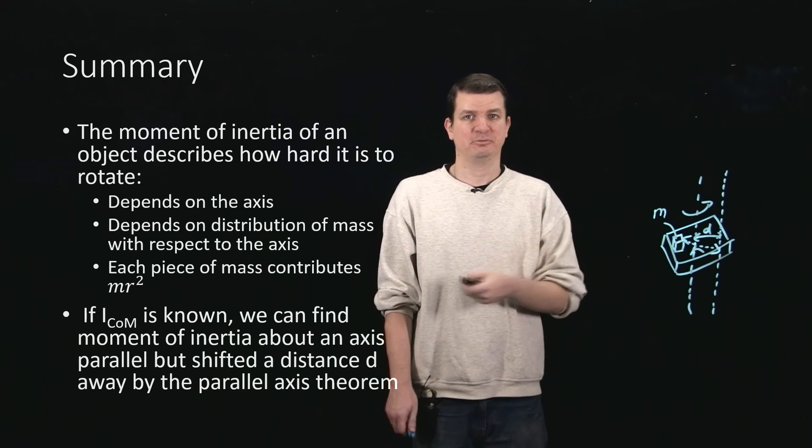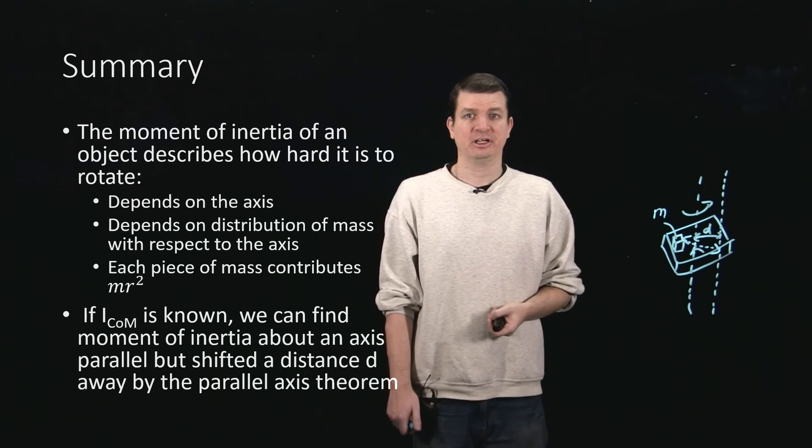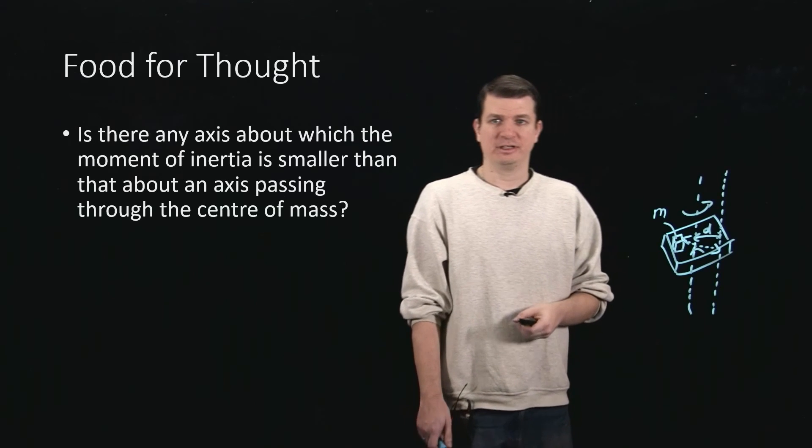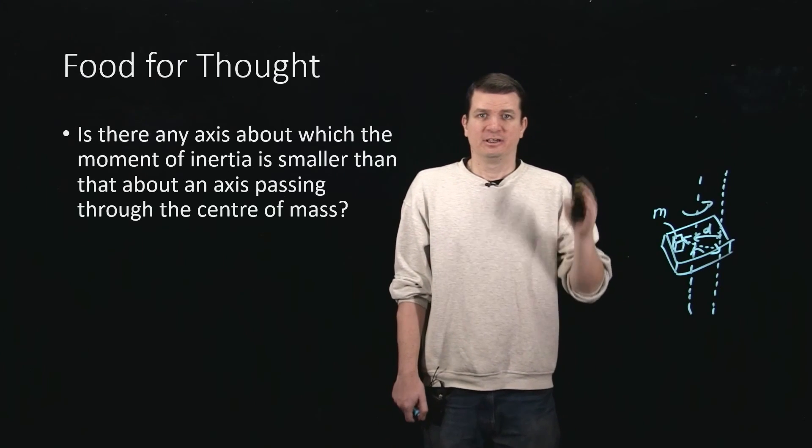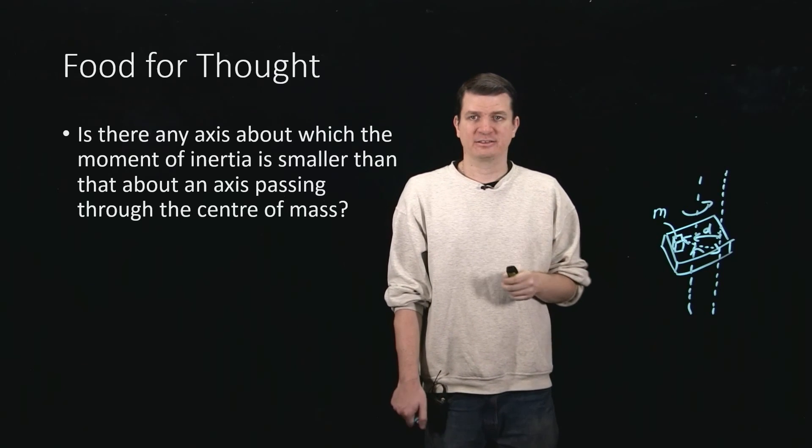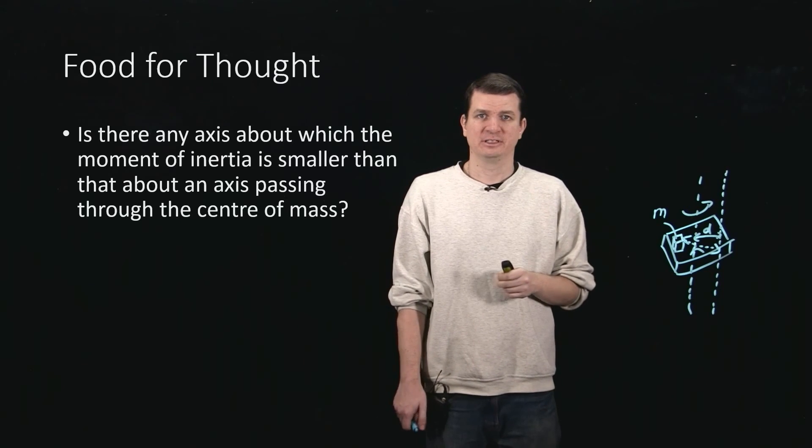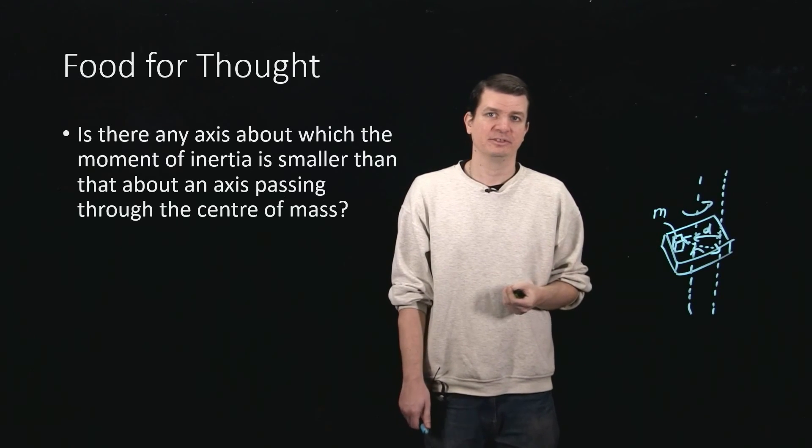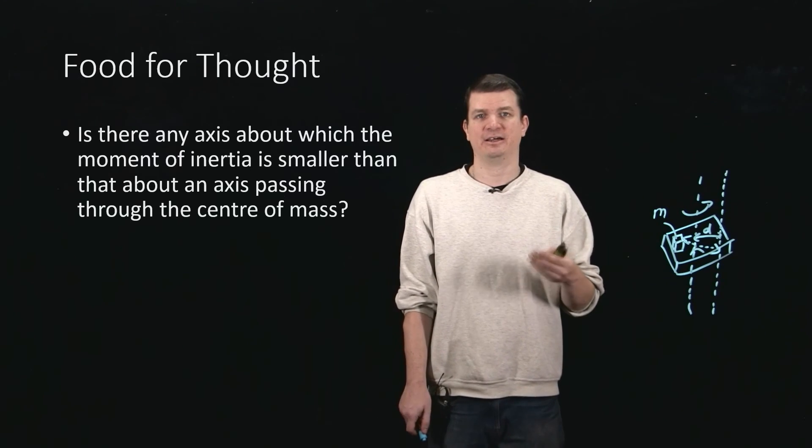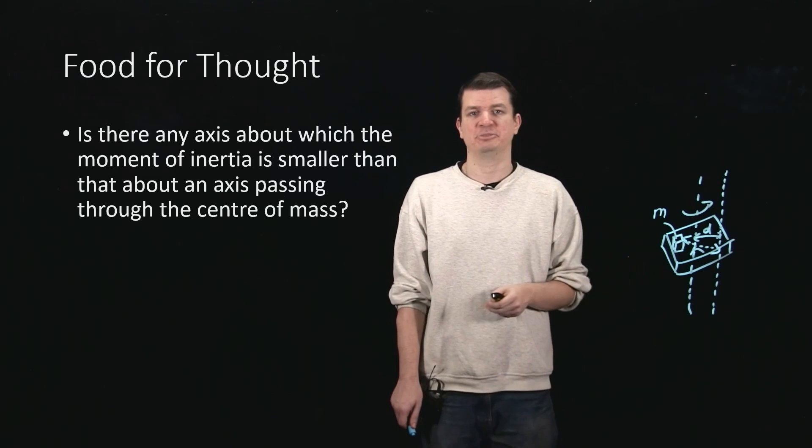Hopefully that was a helpful introduction to moment of inertia, and just to keep thinking about it, try this question. All I want to know is, if you take some axis and you find one, such that the moment of inertia about that axis is actually smaller than the moment of inertia about an axis passing through the center of mass of that same object.